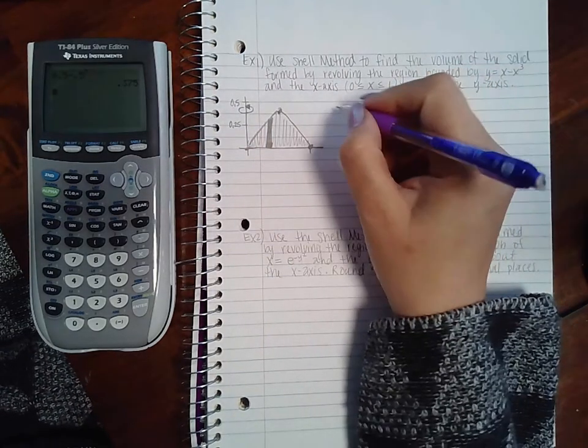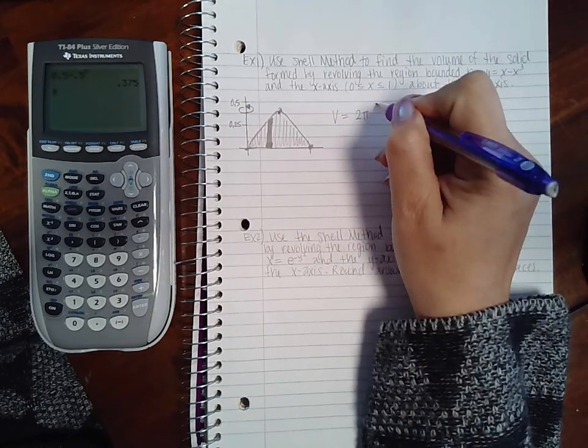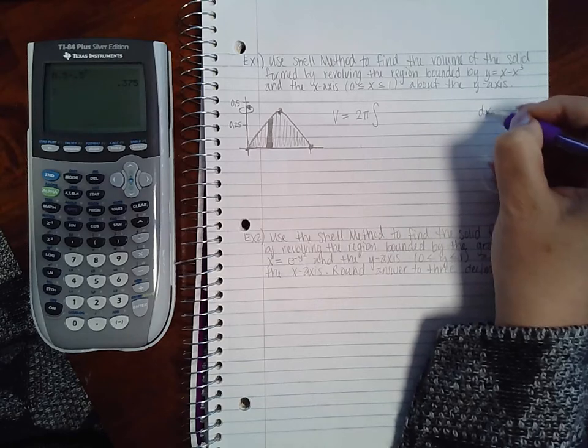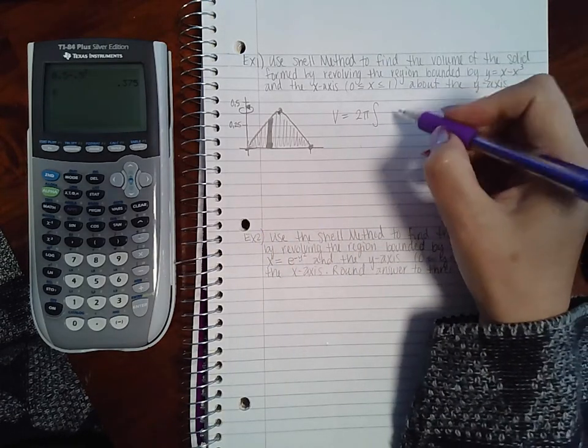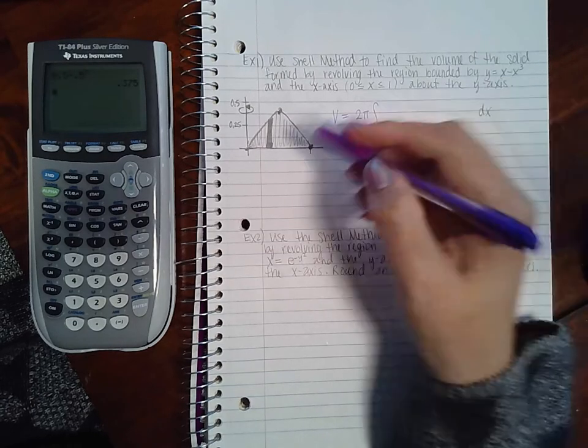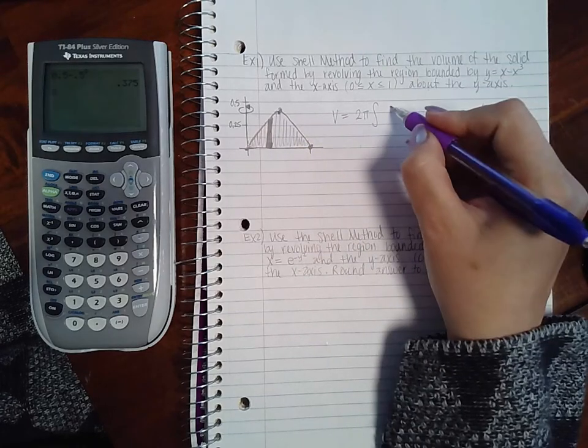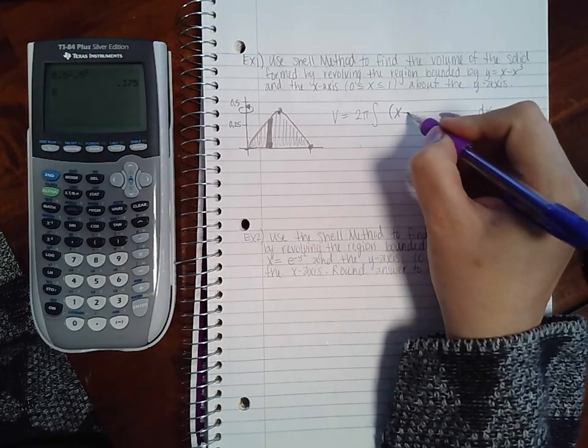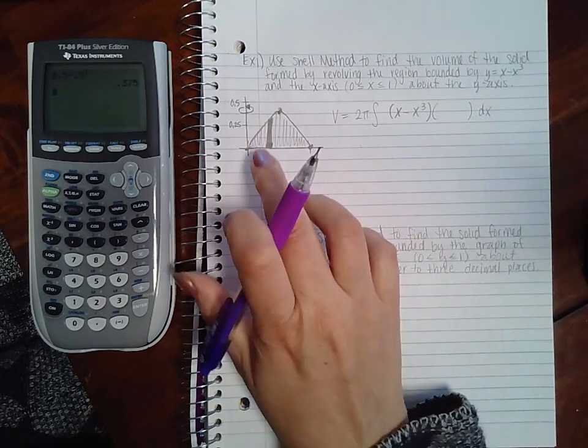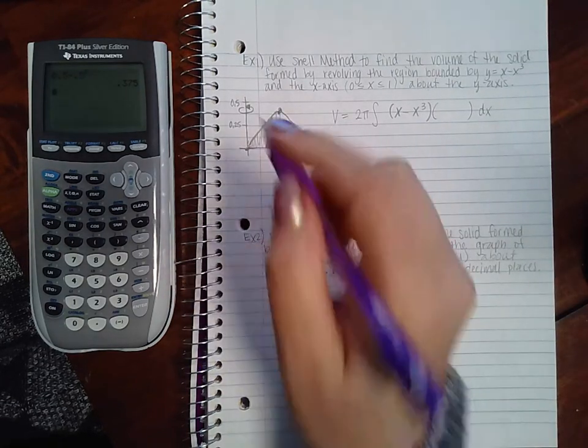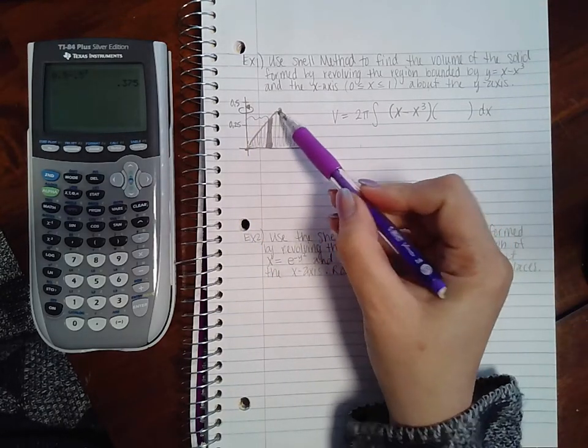So if I want to set this up, I have V equal to 2π, and I am doing it with respect to x because of my vertical rectangle. And I'm going to have h(x), which is going to be this height. Now the height is found with this function, so h(x) is actually going to be x minus x³.